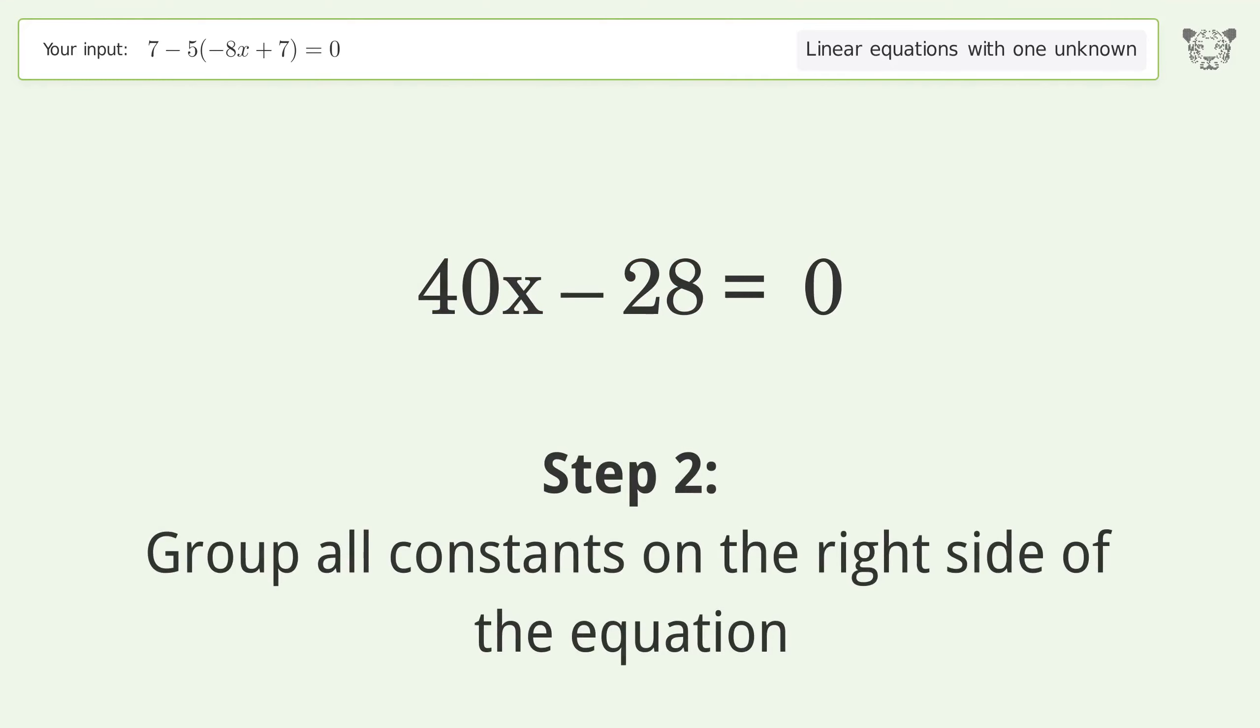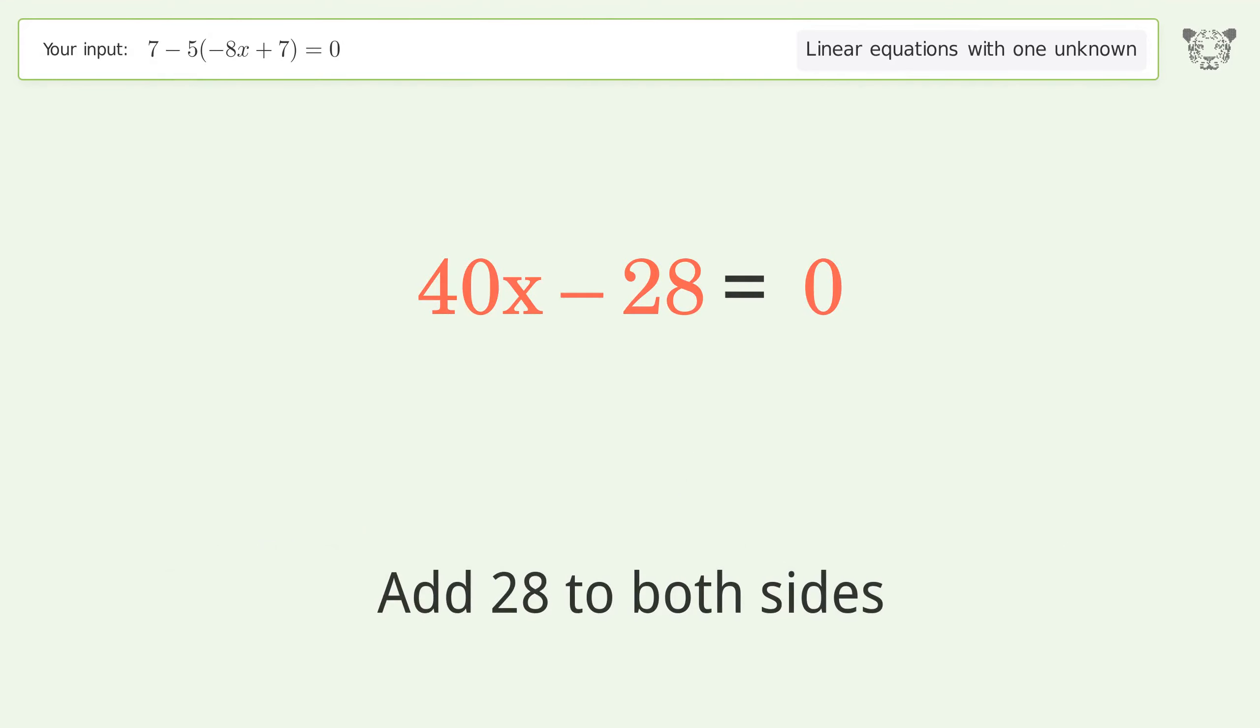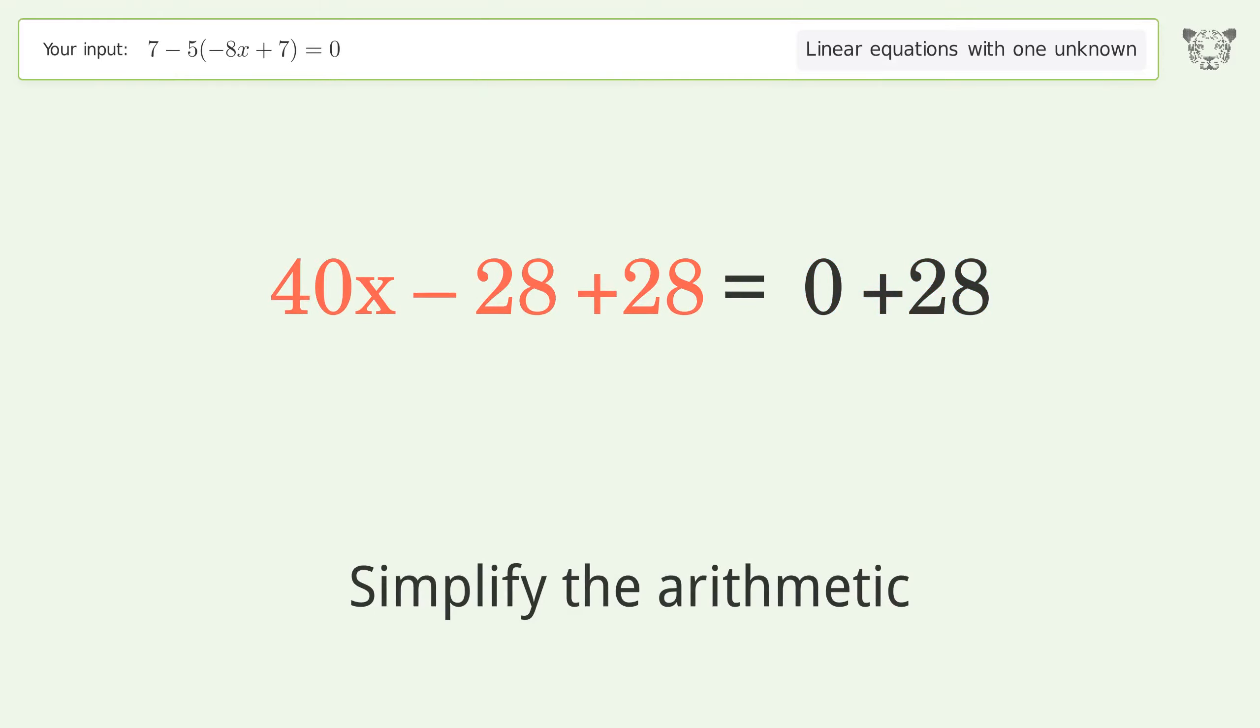Group all constants on the right side of the equation. Add 28 to both sides and simplify the arithmetic.